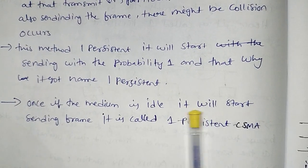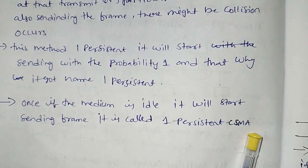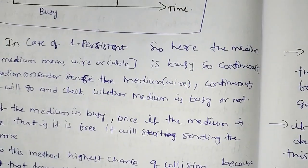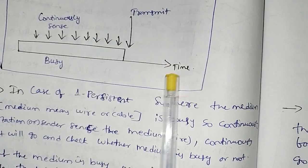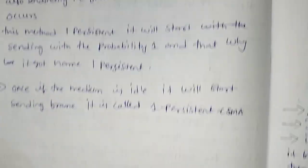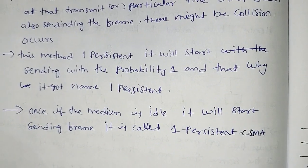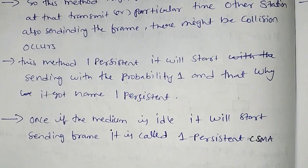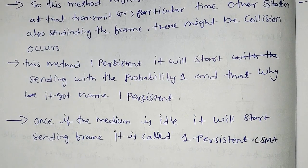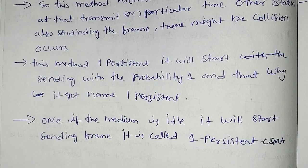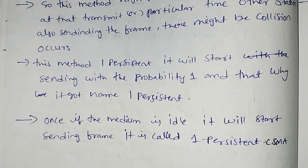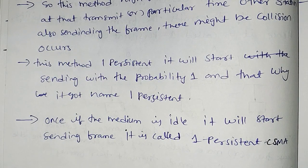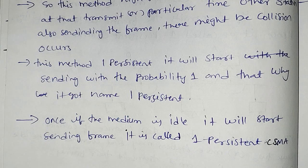Once the medium is idle, the station will start sending a frame — this is called one persistent CSMA. In the next video, I will explain non-persistent CSMA and p-persistent CSMA. This is part 1, and I will explain part 2 in the next video.